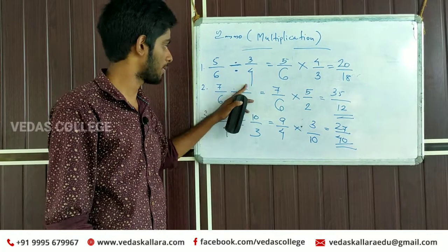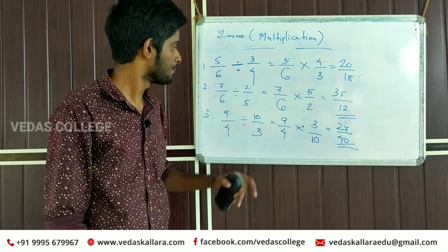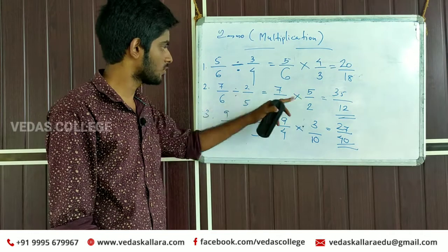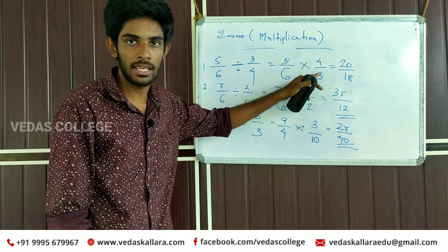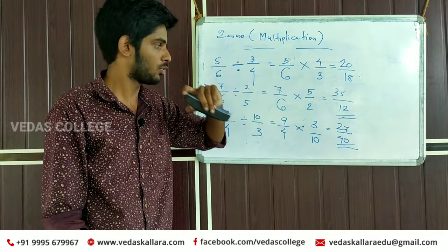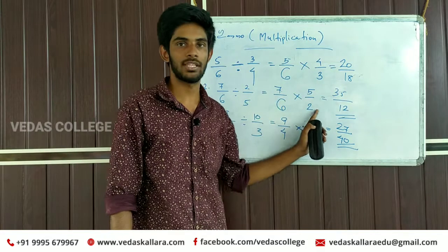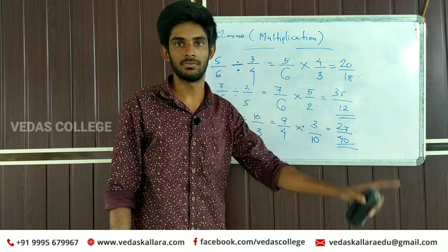We have to do this. We have to do this. 5, 2, then 8. 2, then 8. Now 7, 8, then 8. Is this right?